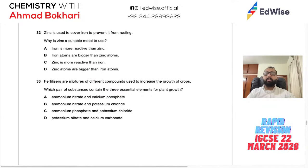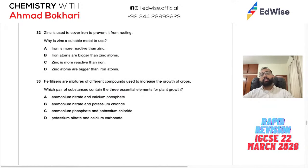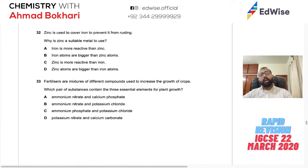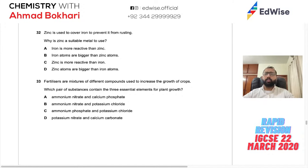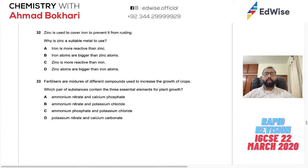Question 33/34: Zinc is used to coat iron to prevent rusting. Zinc is more reactive than iron, so it provides sacrificial protection. This coating process is called galvanizing. The reason zinc is suitable is that it is more reactive than iron, so it corrodes preferentially. Answer: zinc is more reactive than iron.